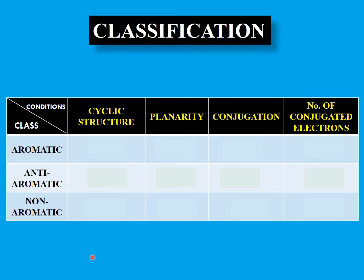Let's see a checklist of requirements for different molecules. For an aromatic molecule, there must be a cyclic structure, the molecule must be planar, there must be conjugation present, and the number of conjugated electrons must equal 4n+2 — the Hückel number. For an anti-aromatic molecule, it must also have a cyclic structure, be planar, and have conjugation, but the number of conjugated electrons will be 4n.